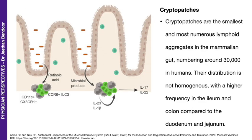Here is an illustration of a cryptopatch. Cryptopatches are found in crypts — they're a small collection of lymphoid tissue, and we have about 30,000 throughout our gut. These are primitive but very, very important to induce other types of lymphoid tissue.